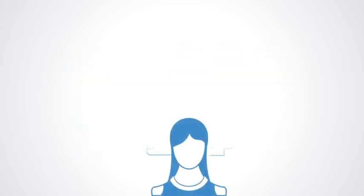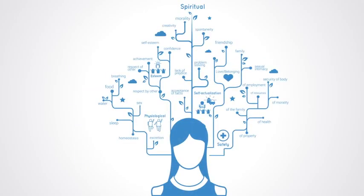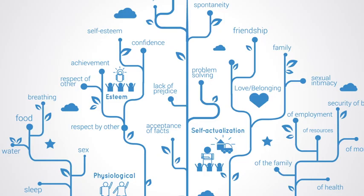However, by learning how to elicit and work with values, we can begin to understand what is important to others and why they do what they do. In doing so, we can begin a process of mapping out the values of the people within the organization.